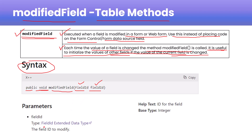FieldId is an extended data type — it is specifically the field of the table which we are going to modify. The base type of this extended data type is integer. If you print the fieldId in the method, you'll be able to see it returns an integer. So now I hope it's clear why the modifiedField table method is used and in which scenarios we should use it. Let's move to the practical session.